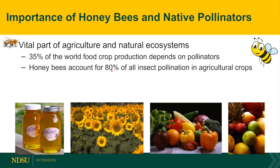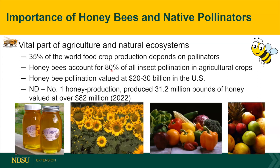Most of you may or may not know that North Dakota is number one in honey production. We produce 31.2 million pounds of honey valued over $82 million every year. We're like New York City in the summer because a lot of the migratory honeybee keepers come up into North Dakota, since we produce many of the crops they like to use for honey production, like sunflower and canola — both of them very nutritious for the honeybee.